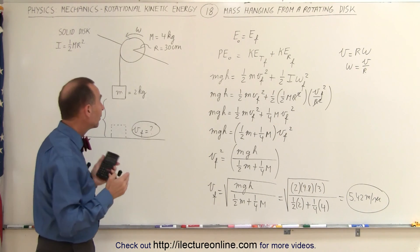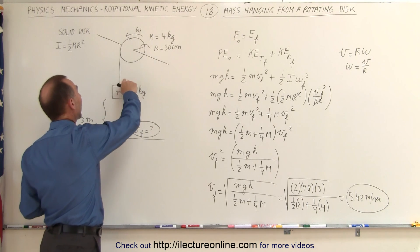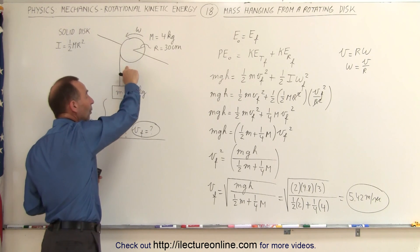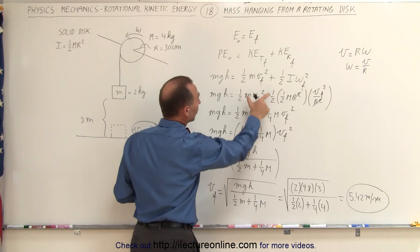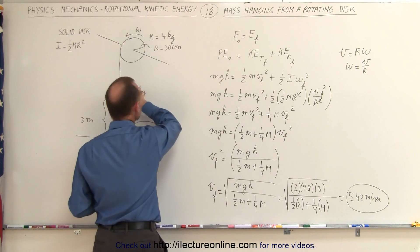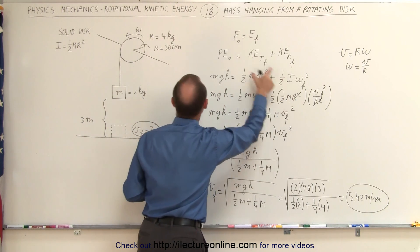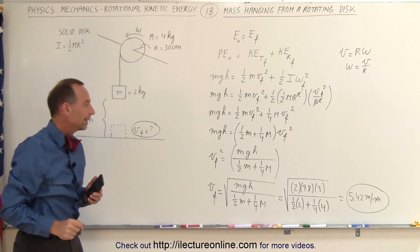So notice that when we deal with an object that is attached to something that can only rotate, we have to take into account that there's both translational kinetic energy gained by this object, and rotational kinetic energy gained by the rotating disk, and that's how it's done.